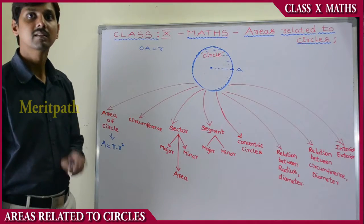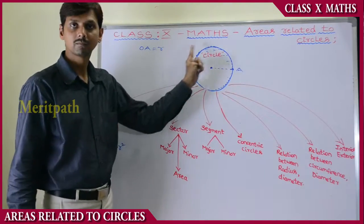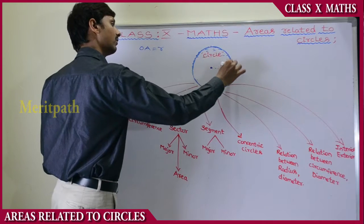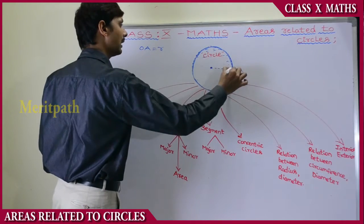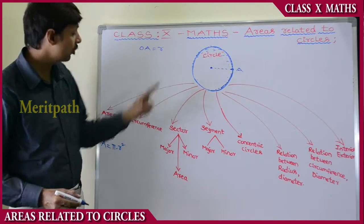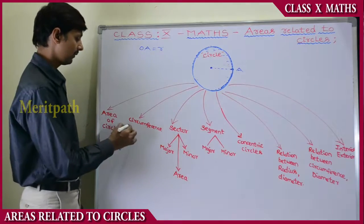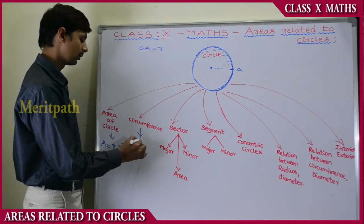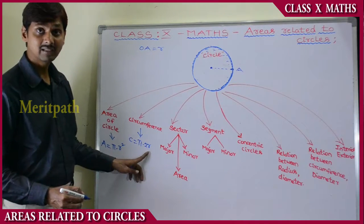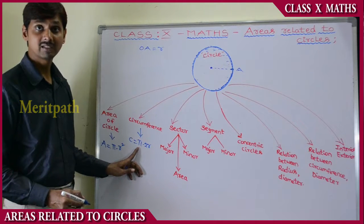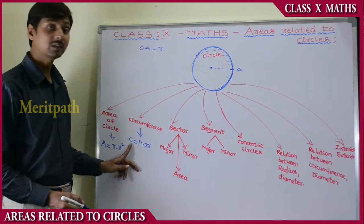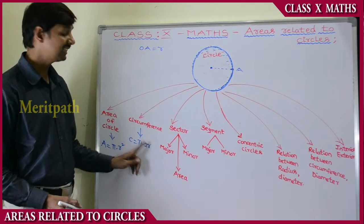The circumference of the circle is nothing but the perimeter of the circle — the length of the boundary. Starting from a point A and taking one complete round along the boundary is called the perimeter, which for a circle is called circumference. Circumference C equals 2πr, where pi is approximately 3.14.